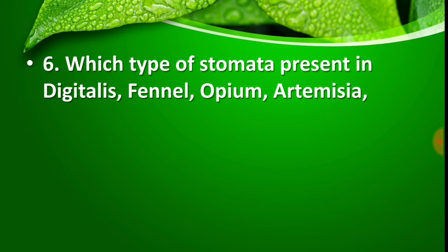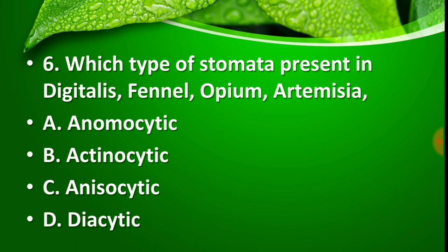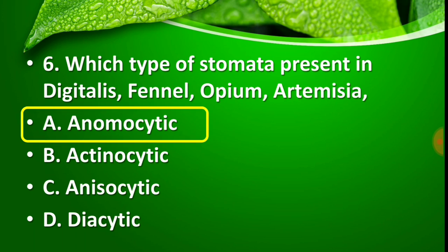Question number 6: Which type of stomata is present in Digitalis, Fennel, Opium, and Artemisia? Options are — Option A: anomocytic stomata, Option B: actinocytic, Option C: anisocytic, Option D: diacytic. The right answer is Option A — anomocytic stomata.